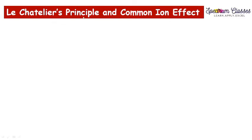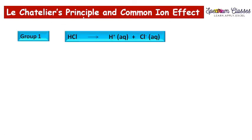Now we are going to discuss the common ion effect along with Le Chatelier's principle. In basic radicals, Group 1 uses HCl as a group reagent, as mentioned in the previous video. HCl dissociates completely. If any salt or acid dissociates completely, we use only the forward reaction — no backward reaction and no equilibrium sign. So HCl dissociates as H⁺ plus Cl⁻.